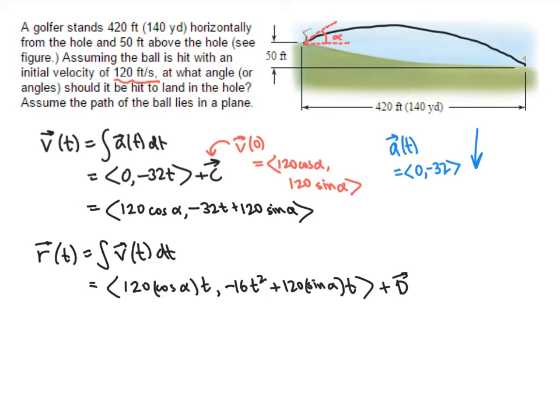But just like before, that constant d vector is going to be r of 0. Now the initial position, the r of 0, is going to be this point in space, which is going to be the point 0 comma 50. So r of 0 is the vector 0 comma 50.